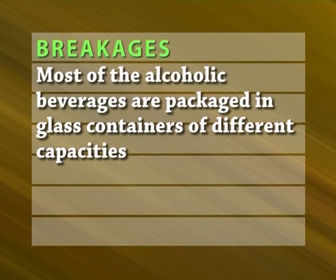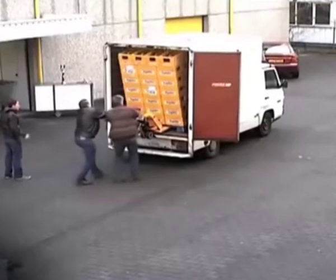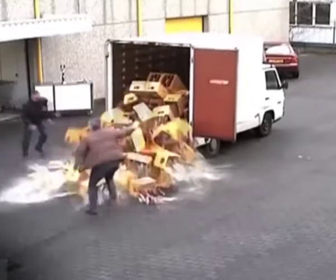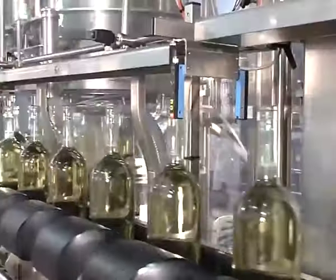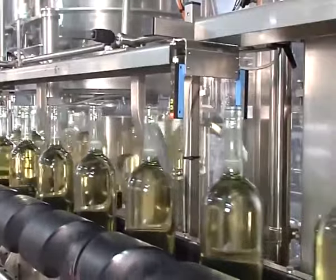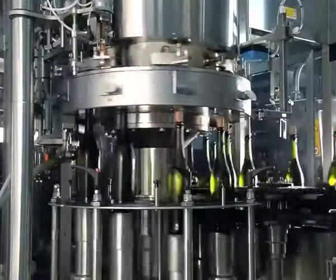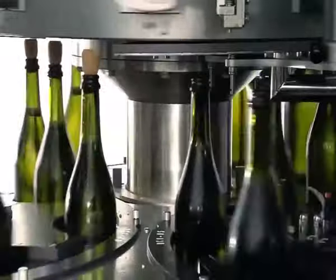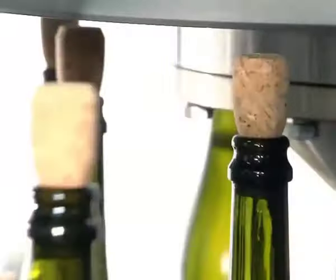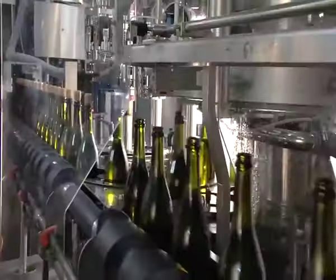Breakages: Most alcoholic beverages are packaged in glass containers of different capacities. Breakages of these containers during transportation and handling are common; therefore a record of the breakages is maintained. Many times during the bottling process in manufacturing, some bottles are filled with lesser quantity than the capacity denoted on the label. These bottles are termed as ullage. Ullage is a term used to describe the space between the surface of the liquid and the cork or lid of the container.